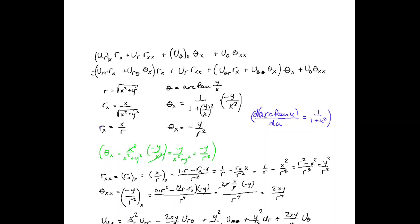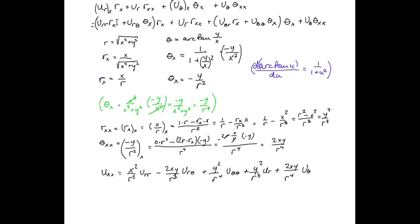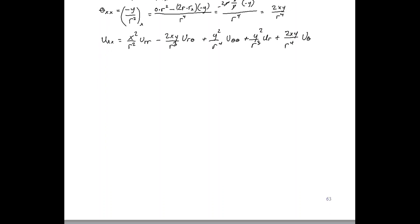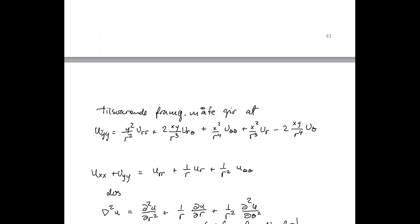Here we have used that the derivative of arctan(u) with respect to u is equal to 1 over 1 plus u squared — this is a well-known formula. Inserting these expressions, we obtain finally that u_xx is given by this expression. Similarly, we can find that u_yy is equal to this expression.